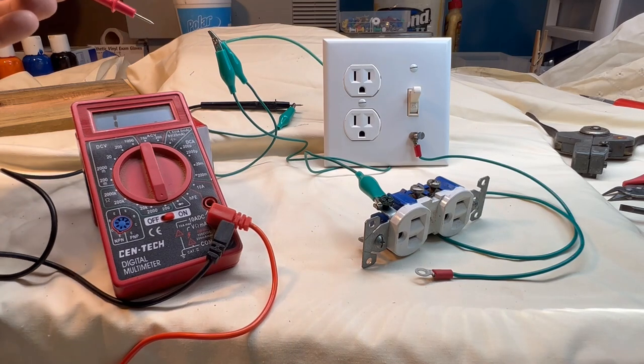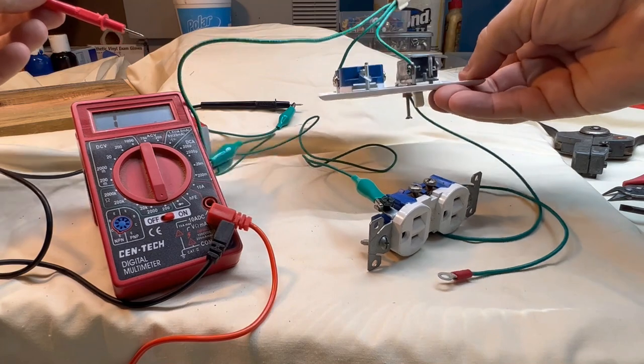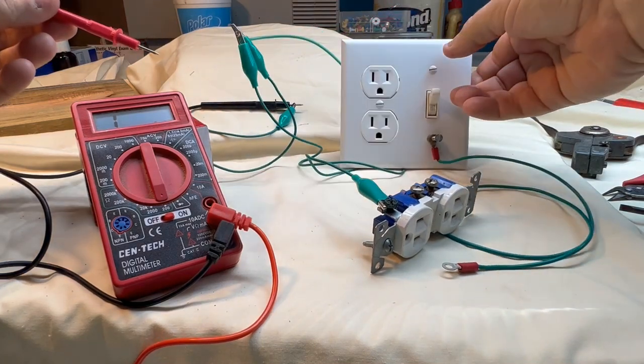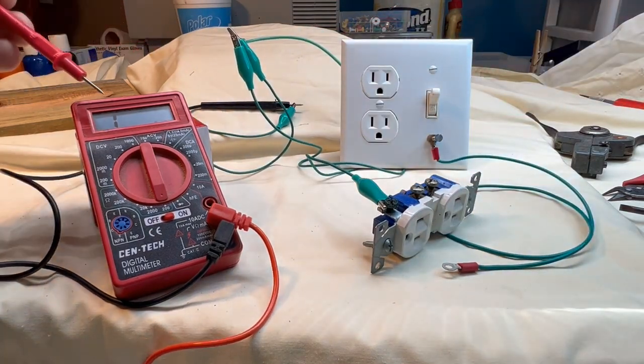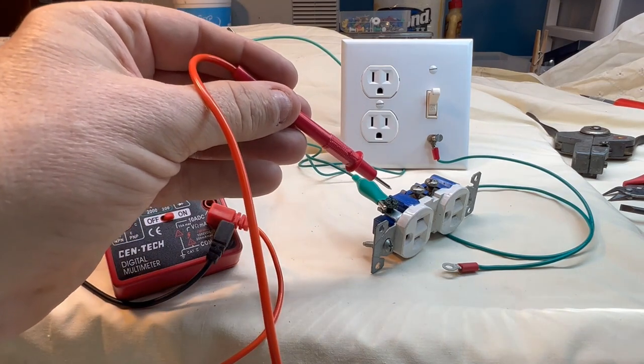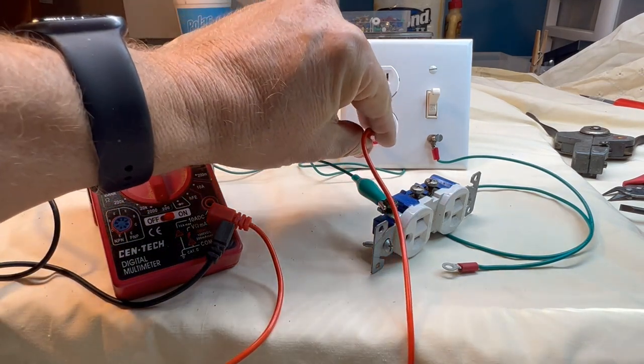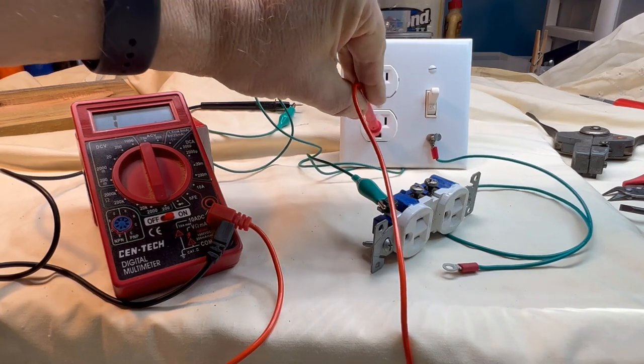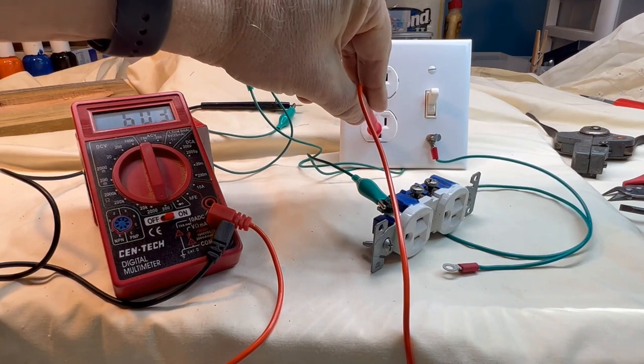setup here is that I've got the grounds on the back of this tied together as they would normally be in the back of an outlet. It comes over, one lead goes to the meter and then the other one comes to this outlet right here. So you can see that I have a ground there,